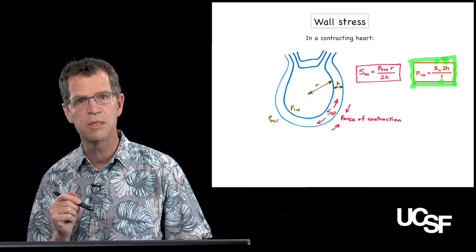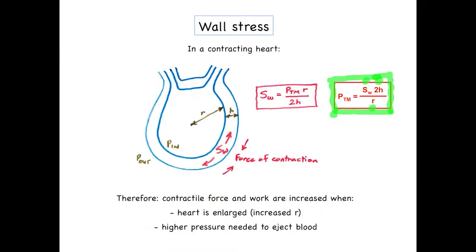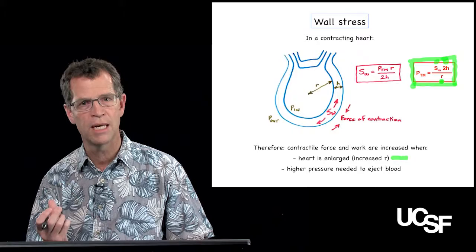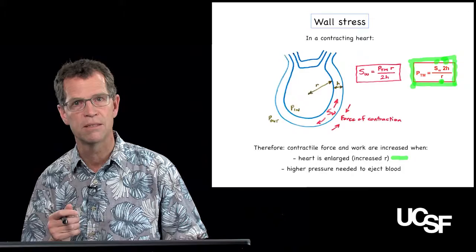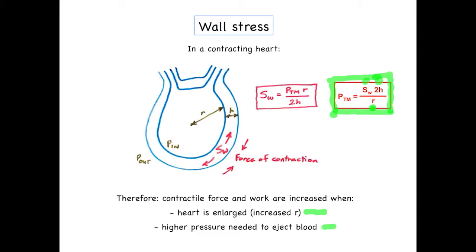This has important clinical applications. Hearts enlarged by disease have a greater radius, so to produce a given pressure, they must generate more wall stress, more muscle contraction, more work, and more oxygen consumption. Any enlarged heart must do more work than a normal-sized heart to produce normal pressure levels — which becomes a problem in heart disease where oxygen consumption is increased because the heart is enlarged.